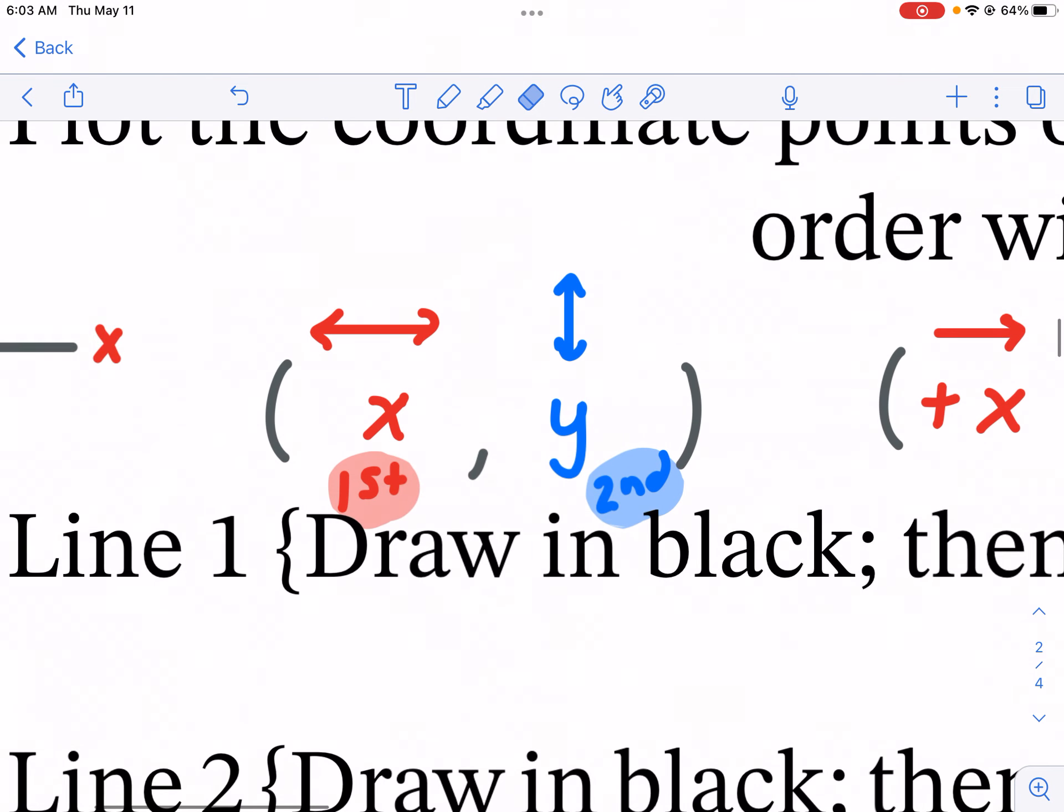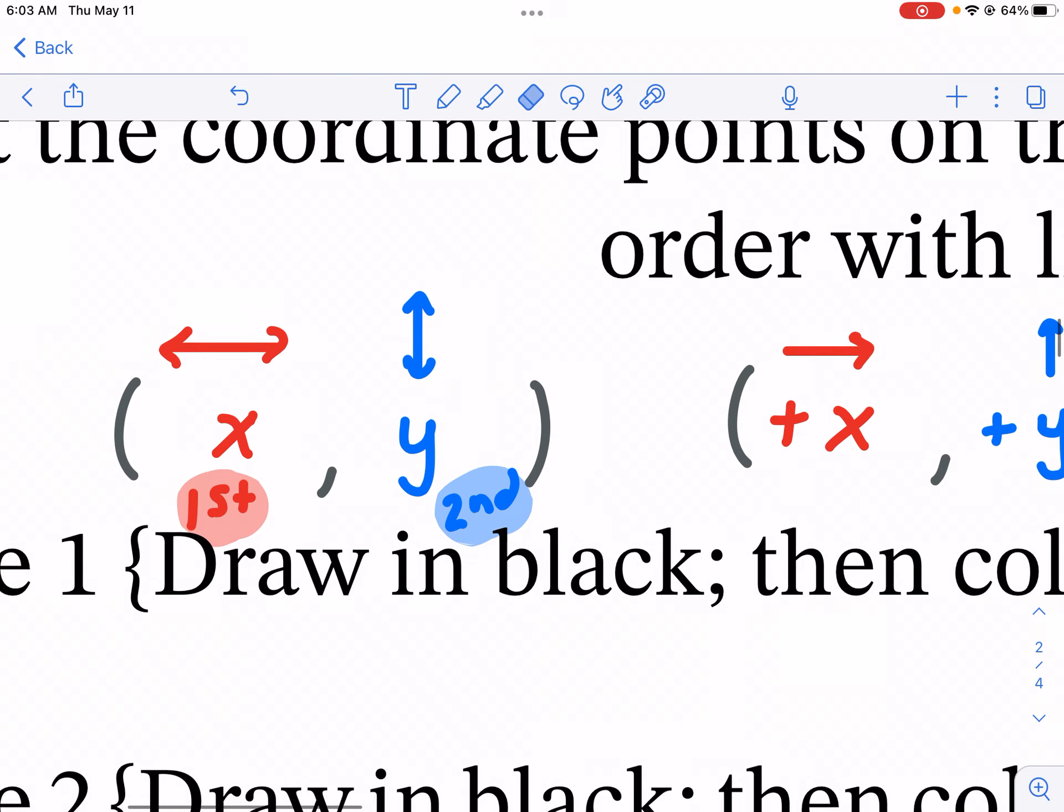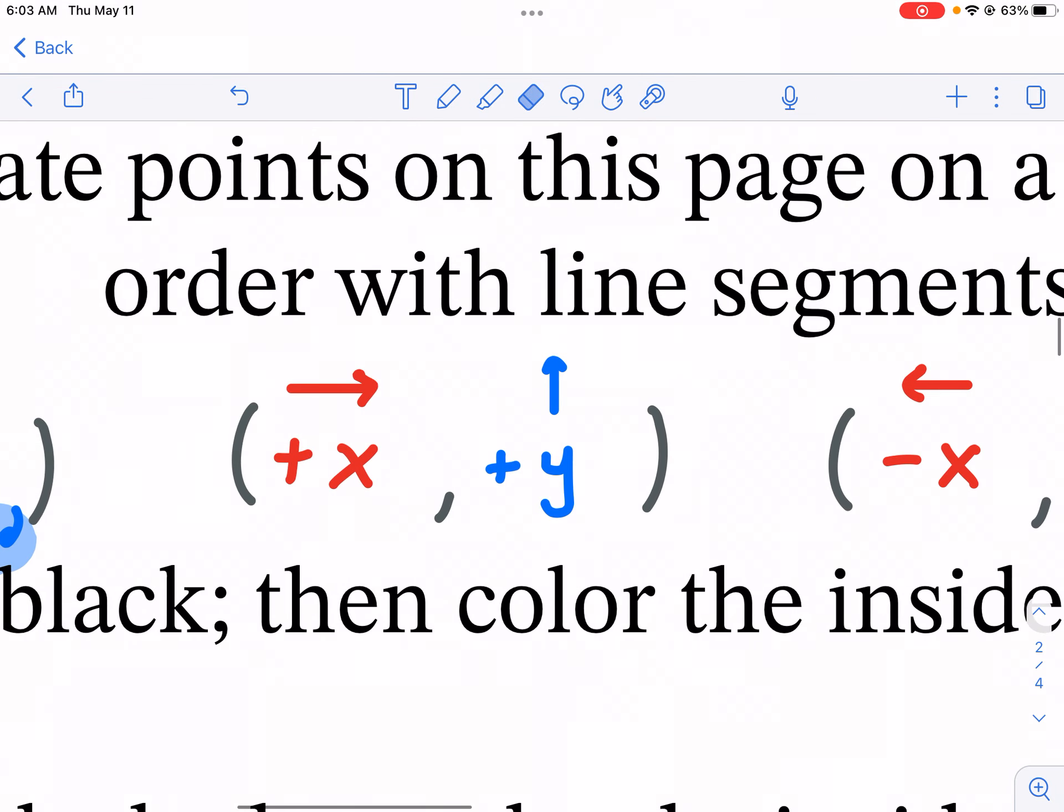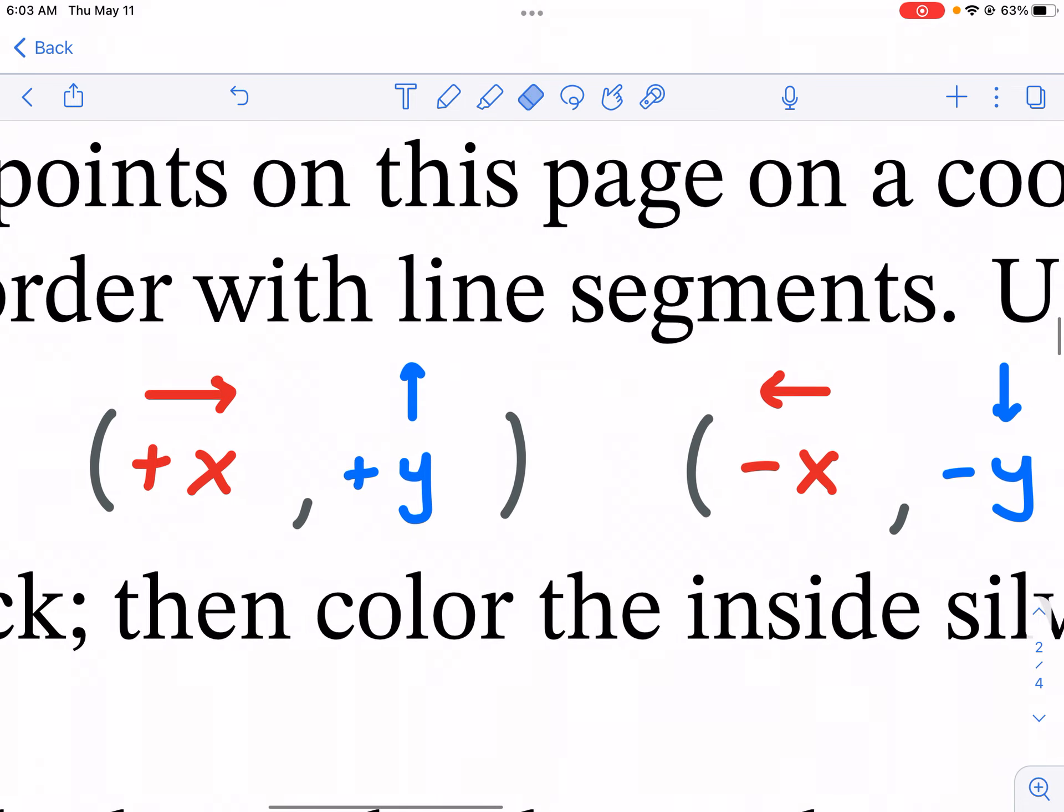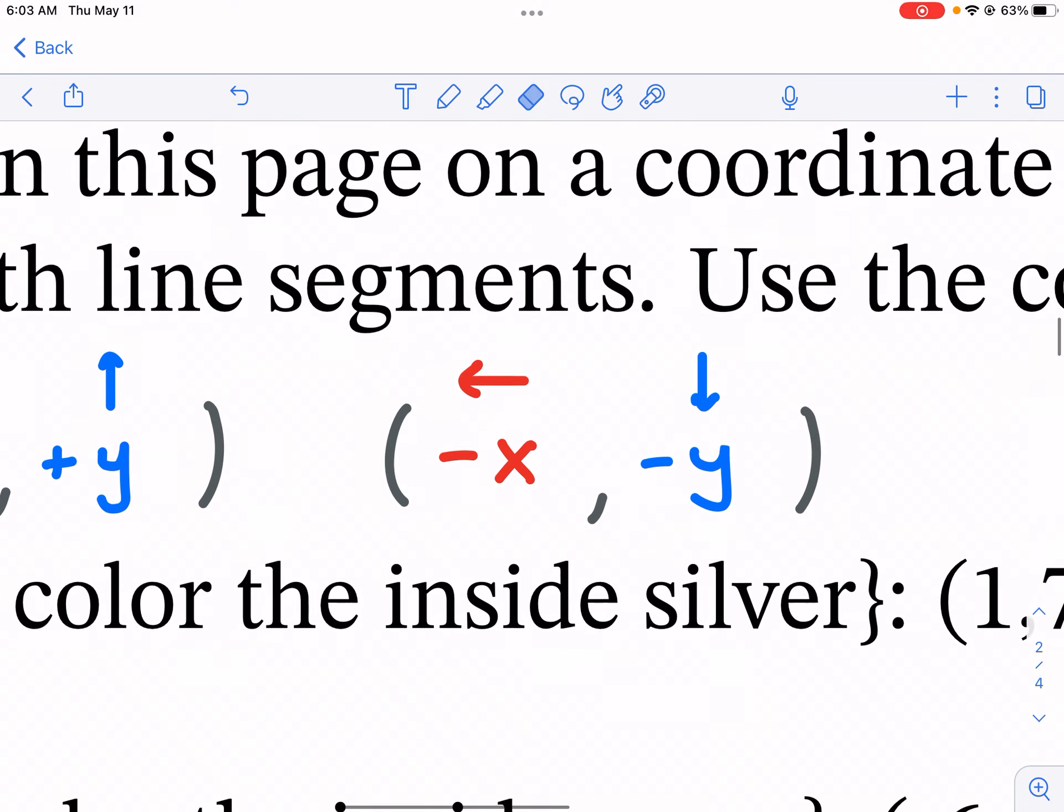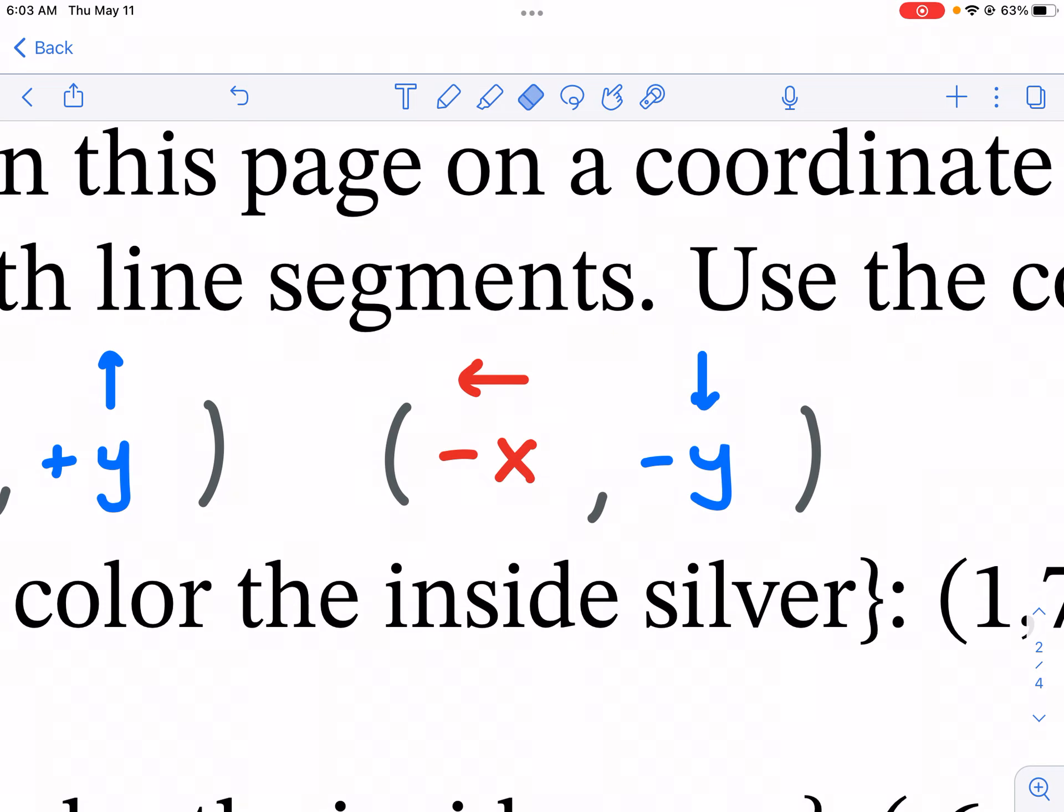You're going to plot the X first, which is the left and right coordinate, and then you're going to move on to the Y, which is the second coordinate, and that's up and down. So if we have a positive X, we're going to be moving in the right direction, and then a positive Y will move us up. And then we're going to move left for a negative X coordinate and down for a negative Y coordinate.